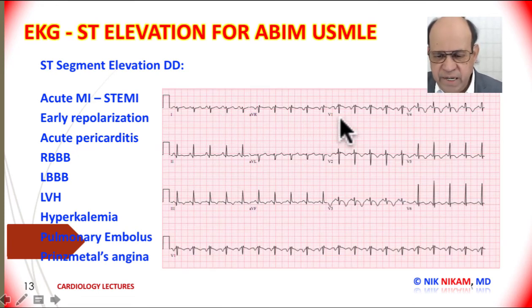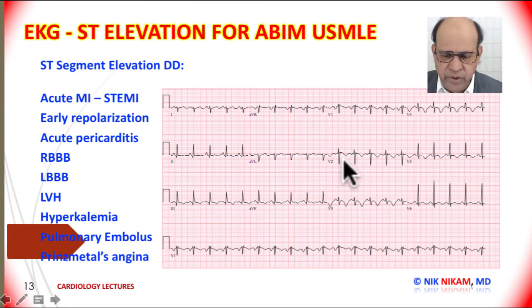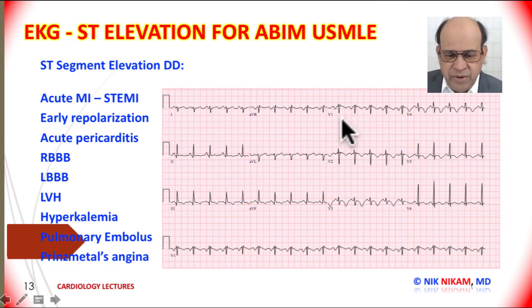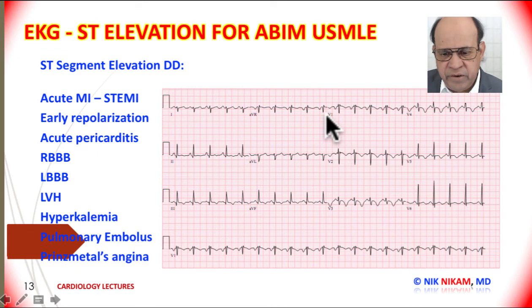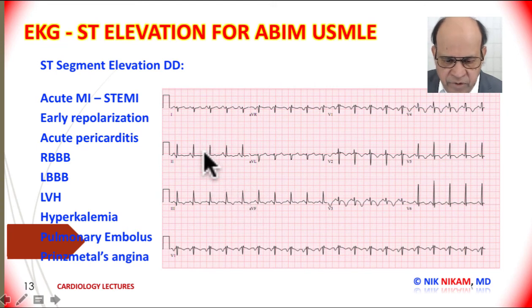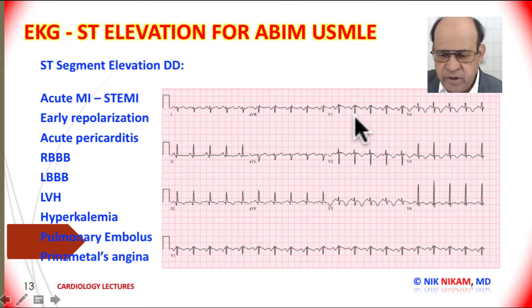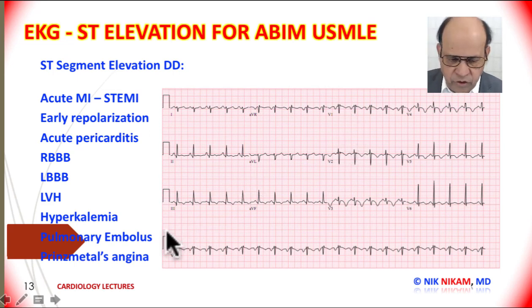Occasionally we can see minor ST elevation in the anterior leads, especially in V1 and V2, which could be a subtle sign of a very serious medical problem — namely acute pulmonary embolus. Other features that can help include right axis deviation, sinus tachycardia, evidence of right atrial enlargement or strain, and incomplete right bundle branch block. All of these findings may give indirect evidence of acute pulmonary embolus, which can also present with a picture resembling an acute myocardial infarction.